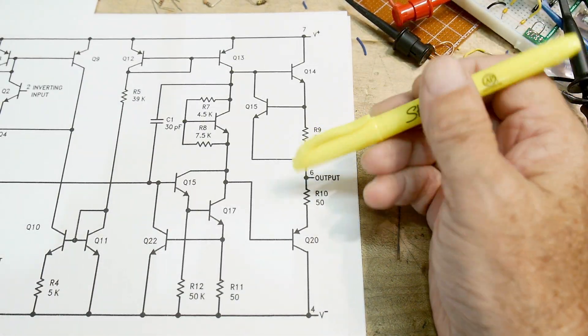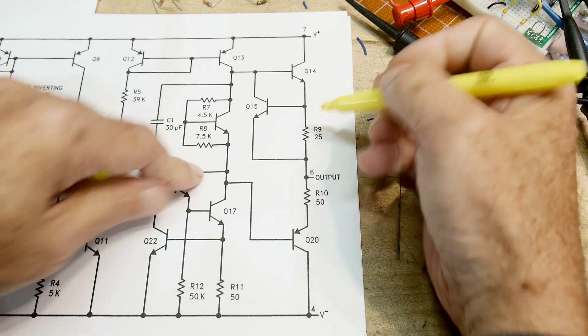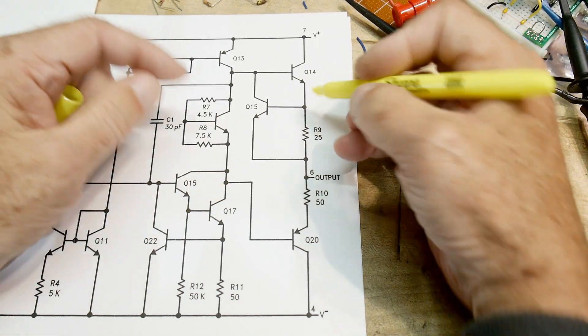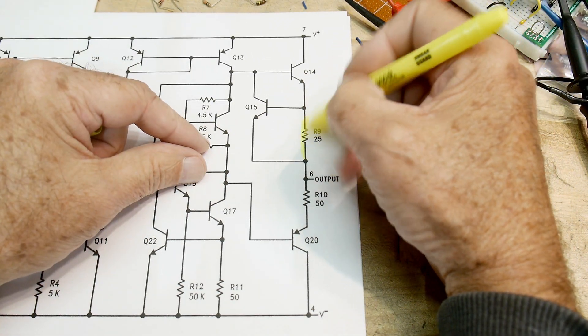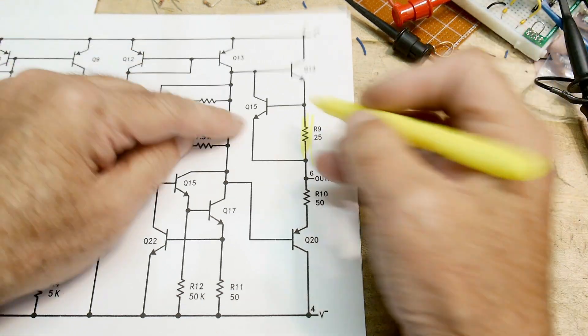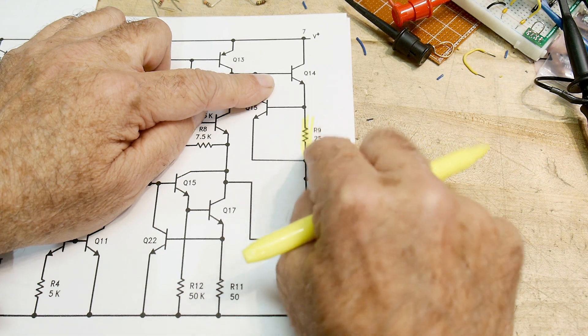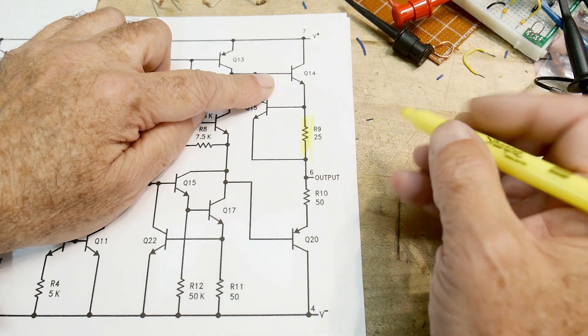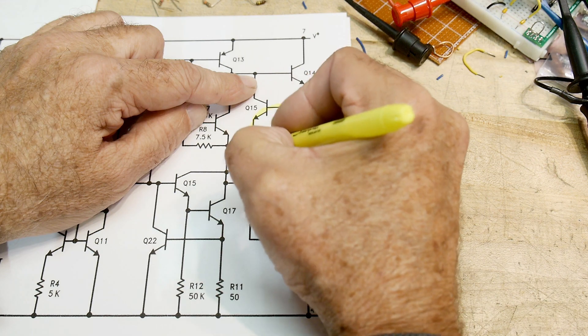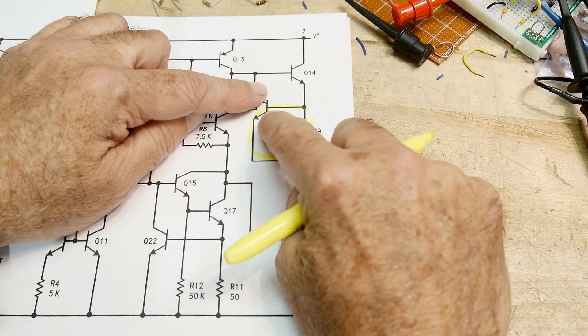There's some output short conditions. If you short this thing, you're going to draw lots of current, and the current will go through this resistor. If it becomes larger and this voltage across this resistor is larger than 0.6 volts, then you will start turning on this transistor.